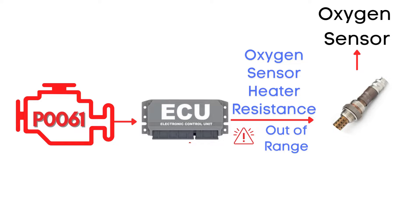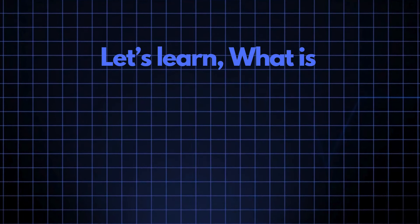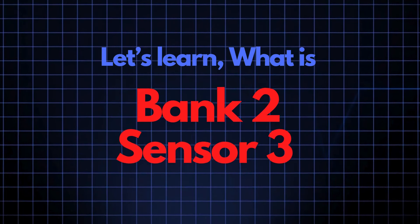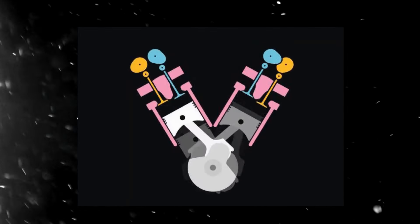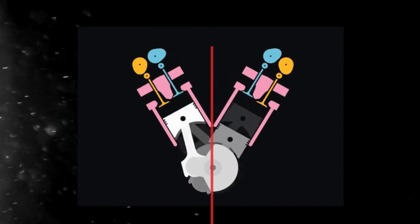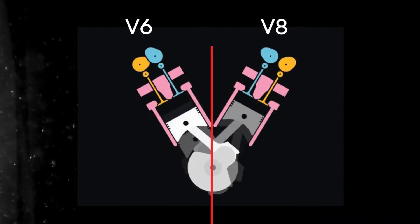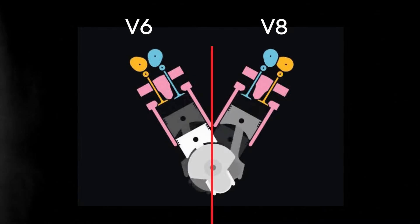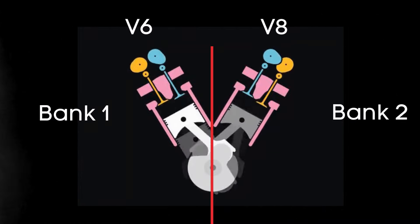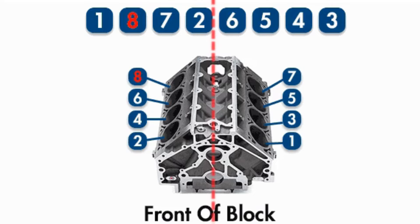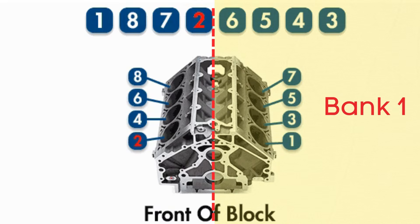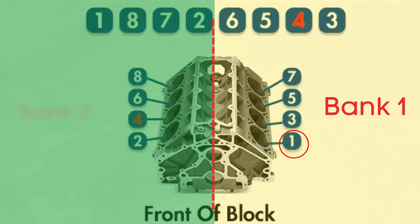Specifically, we're talking about the oxygen sensor heater circuit for bank 2 sensor 3. In engines with multiple cylinder banks like V6 or V8 engines, you'll have two sides or banks of cylinders. Bank 1 typically refers to the side of the engine where cylinder 1 is located, and bank 2 is on the opposite side.